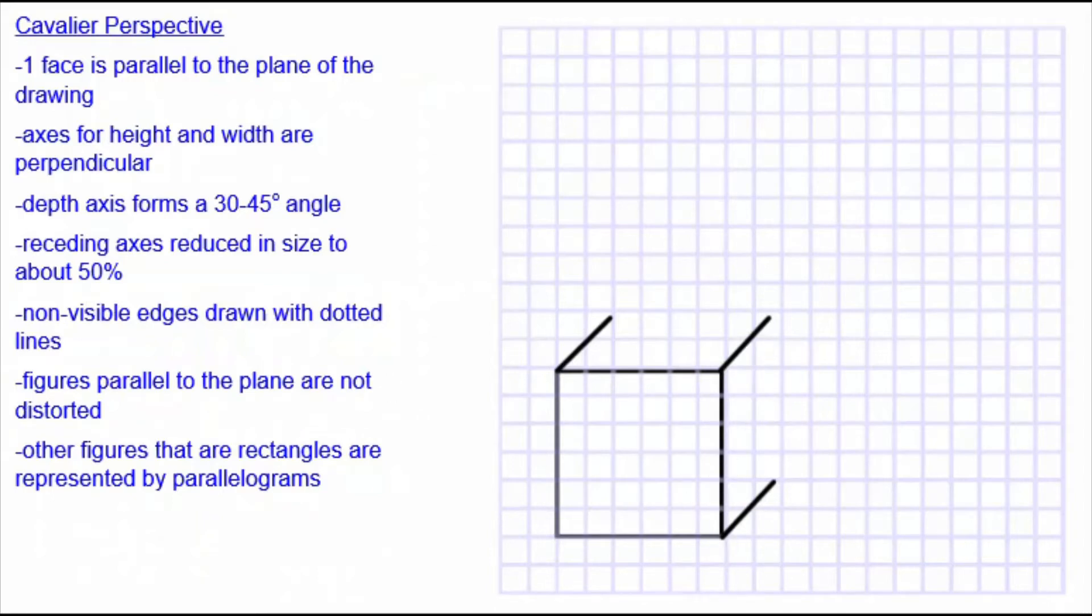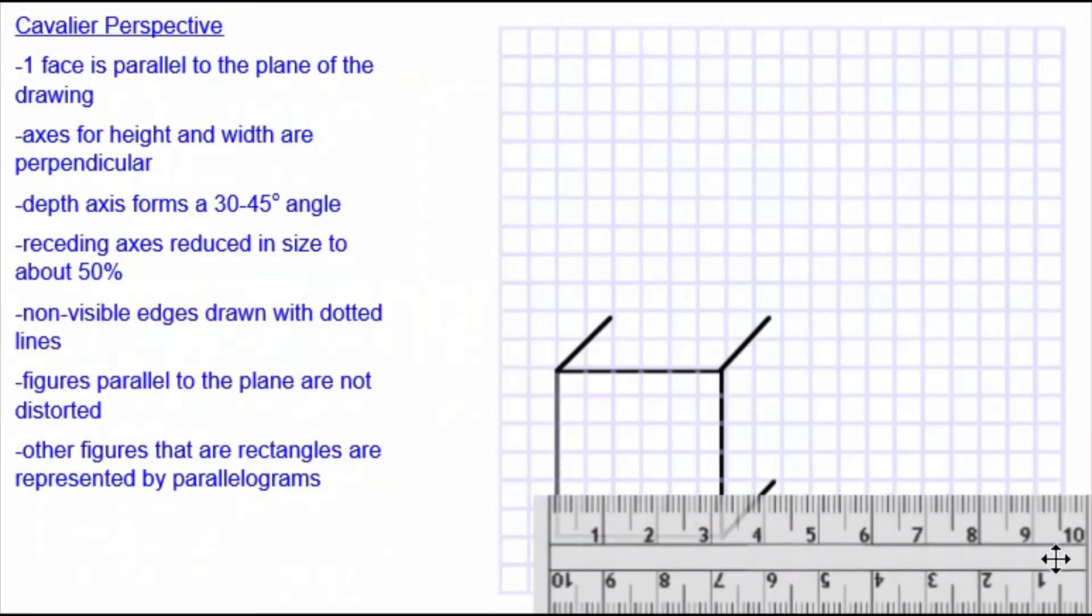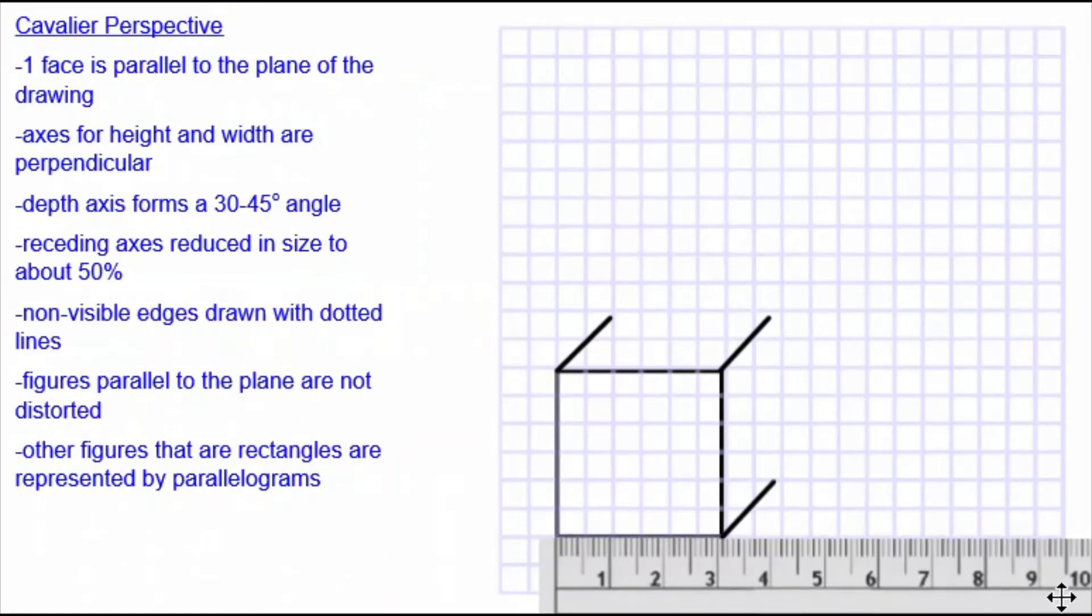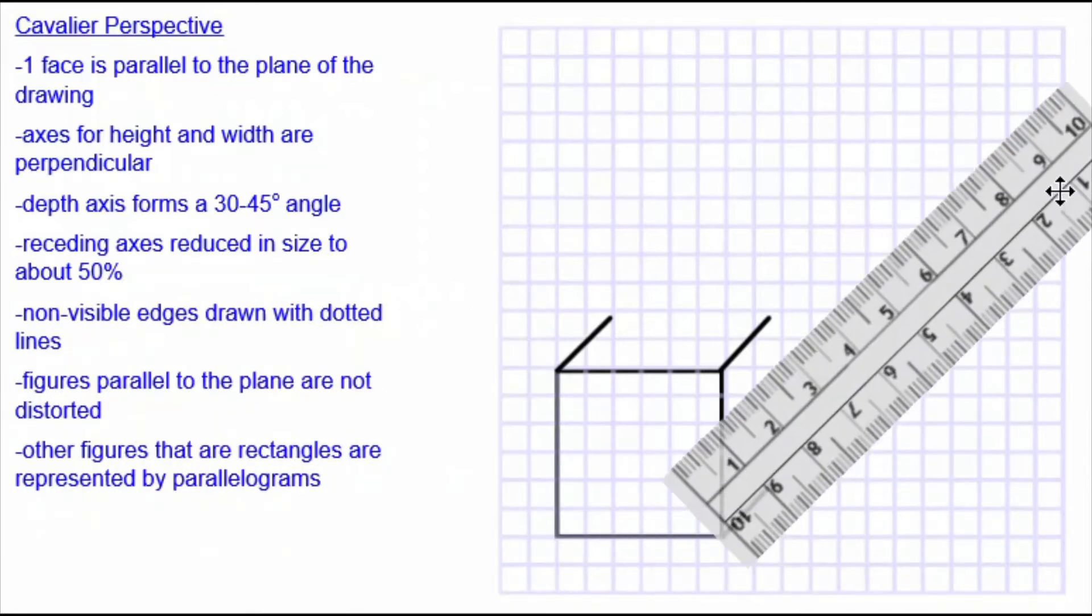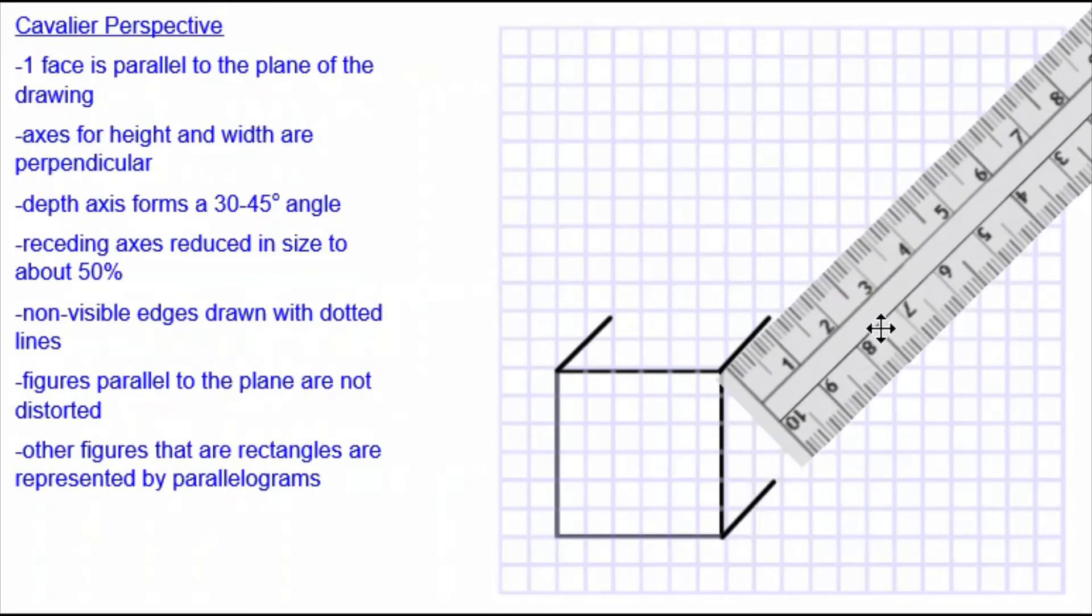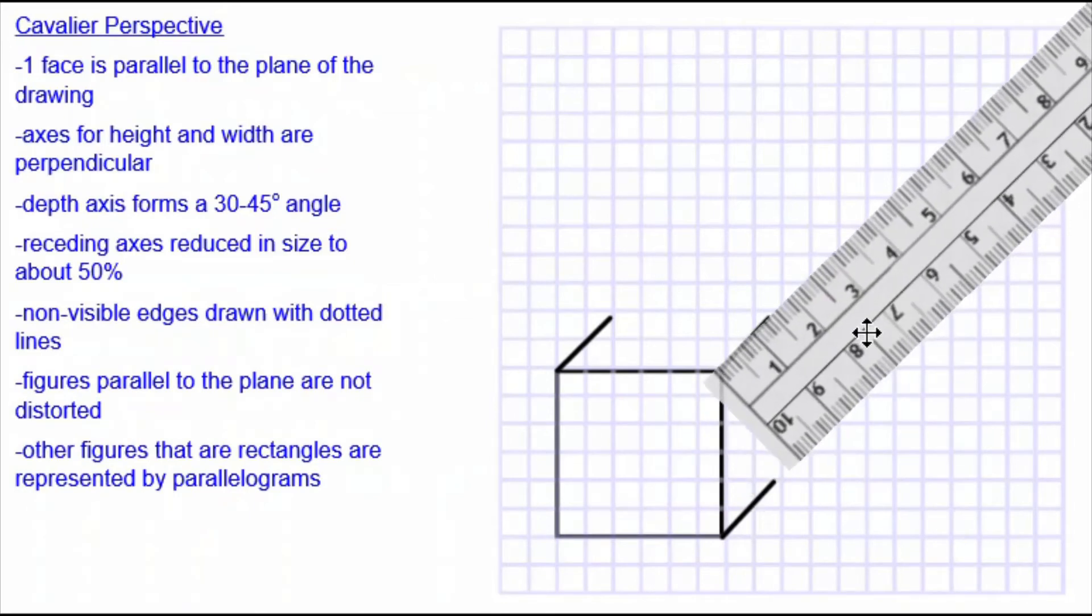Notice the length of these lines. The front facing side of the cube has sides that are three centimeters in length. But the receding edges are drawn to be one and a half centimeters in length.